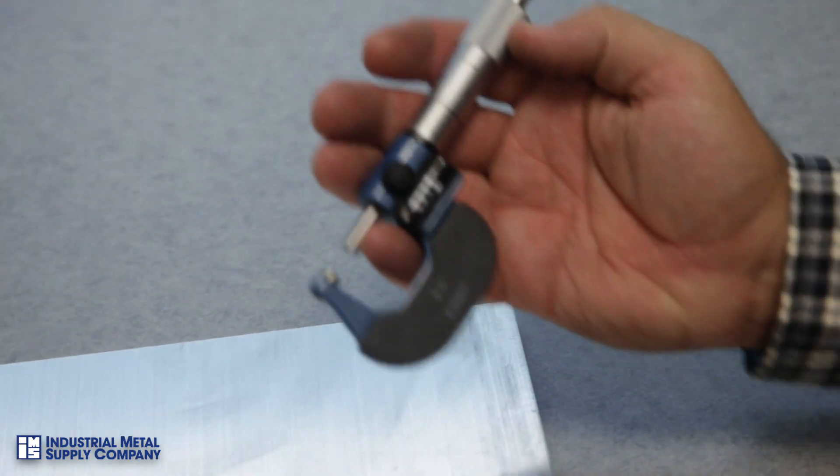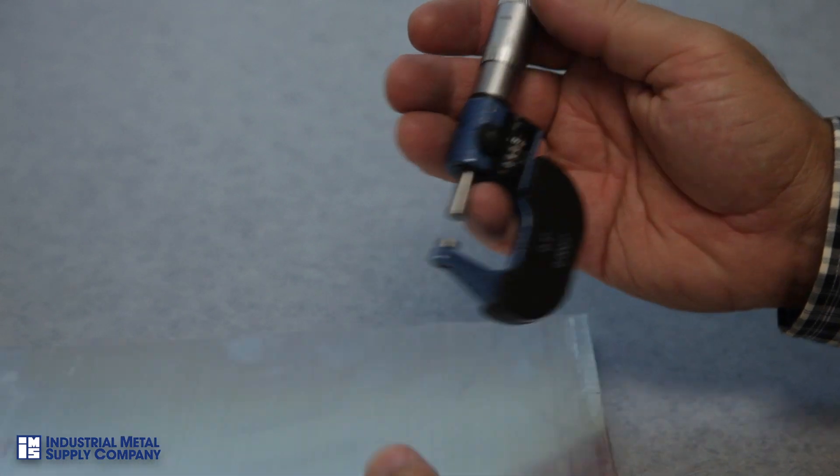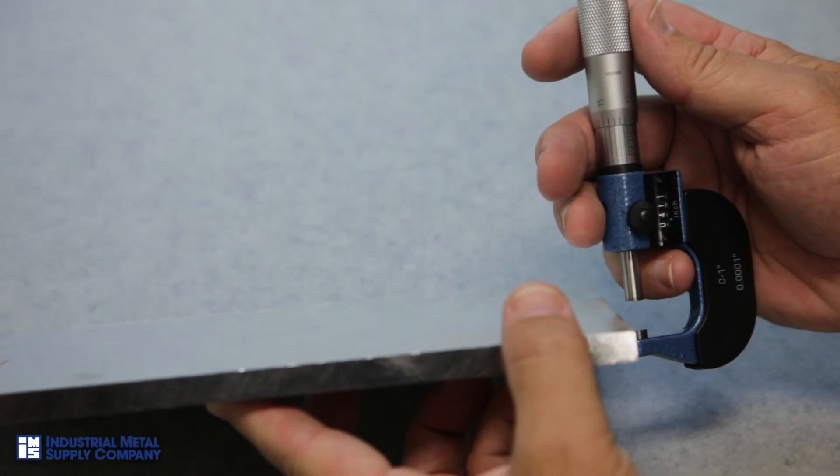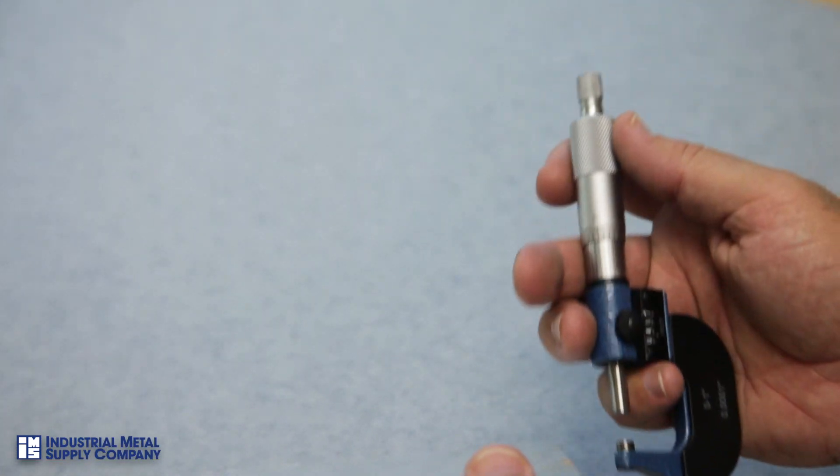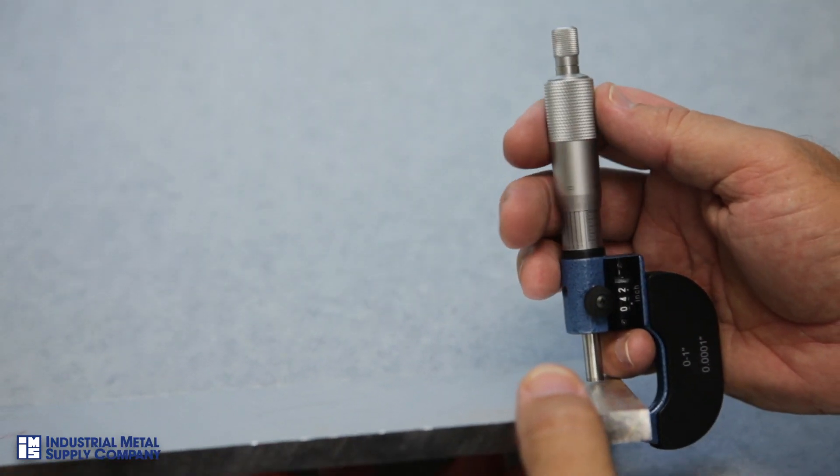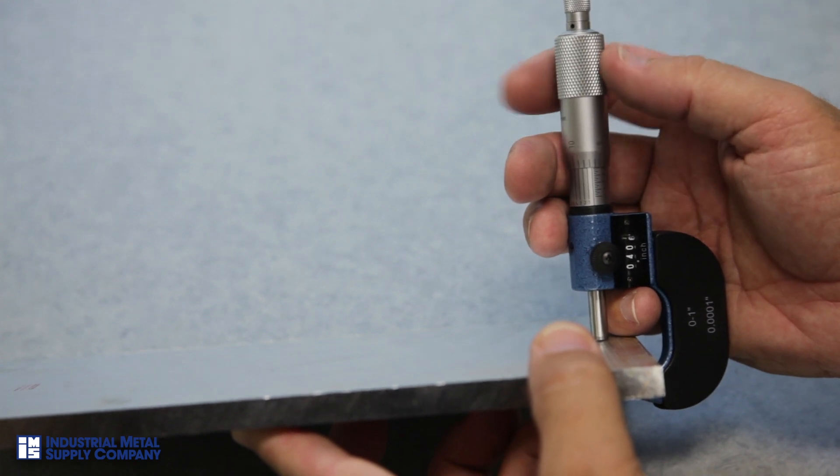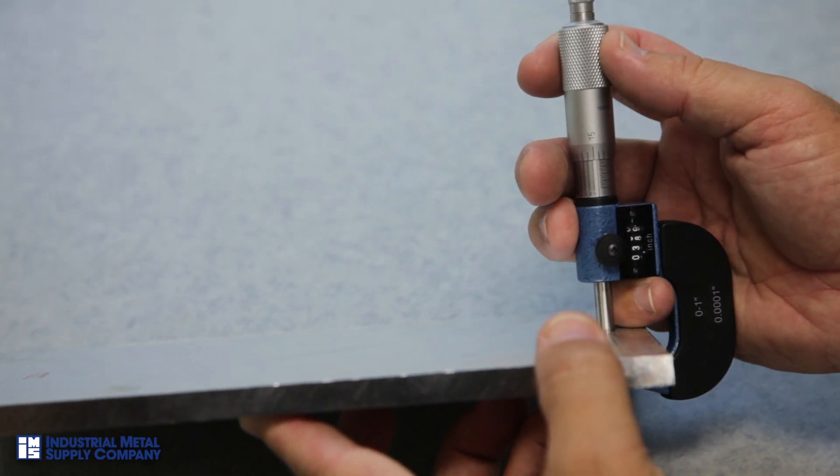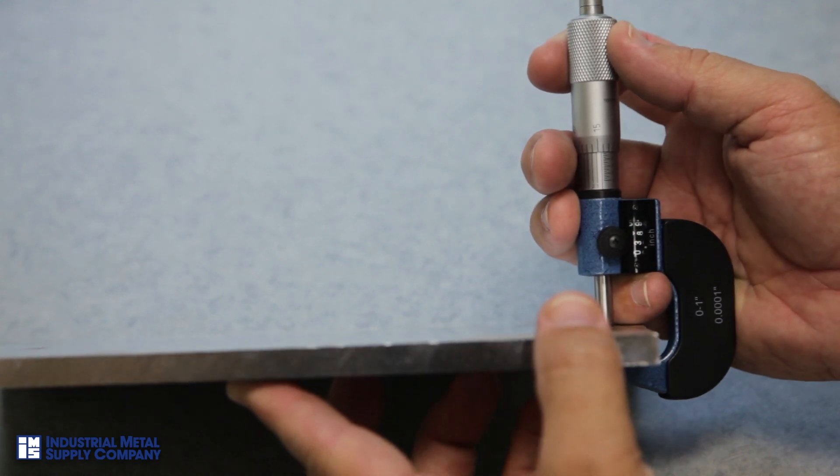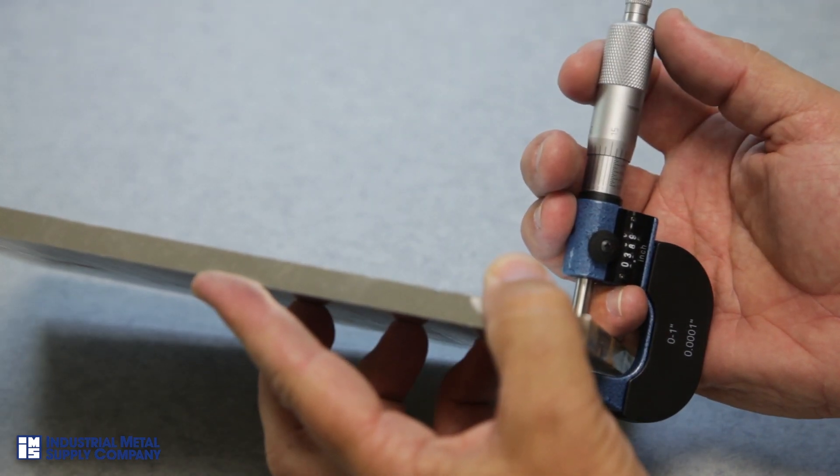Now we're going to use the digital zero to one micrometer to measure the thickness of this three-eighths plate. By opening the micrometer to greater than 375, sliding the micrometer over the plate, tightening with the spindle so the anvils of the micrometer are firmly against both surfaces of the plate, and then reading the display of 0.389.